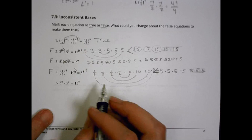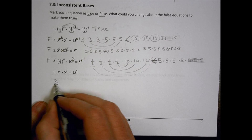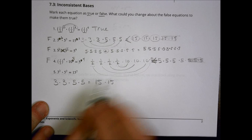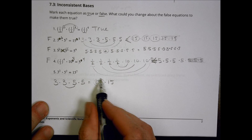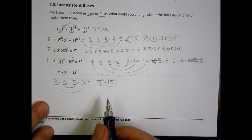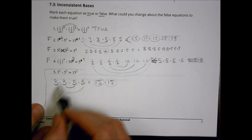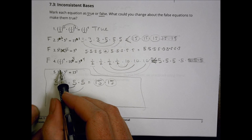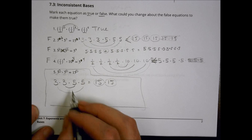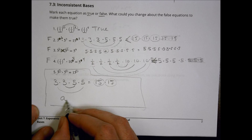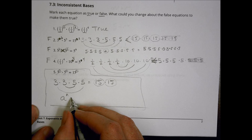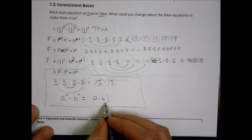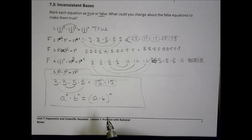This last one is a little like what we've been doing. It becomes three times three times five times five equals fifteen times fifteen. Here's a three and a five — that's one fifteen. And here's another three and a five — that's another fifteen. So it's really interesting: even though the bases are different, there are ways to combine them together when the exponents are the same.